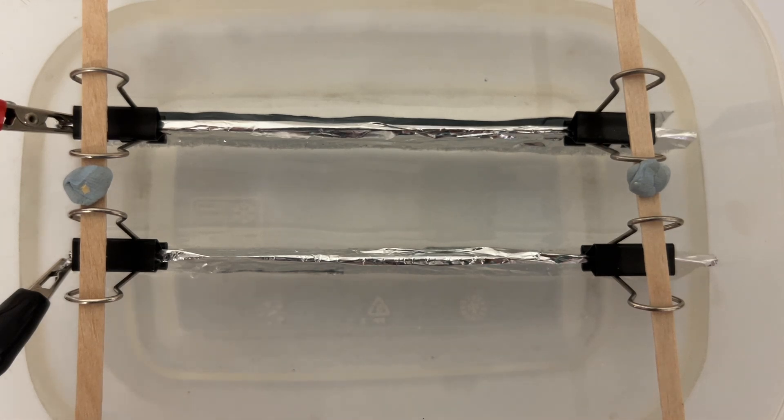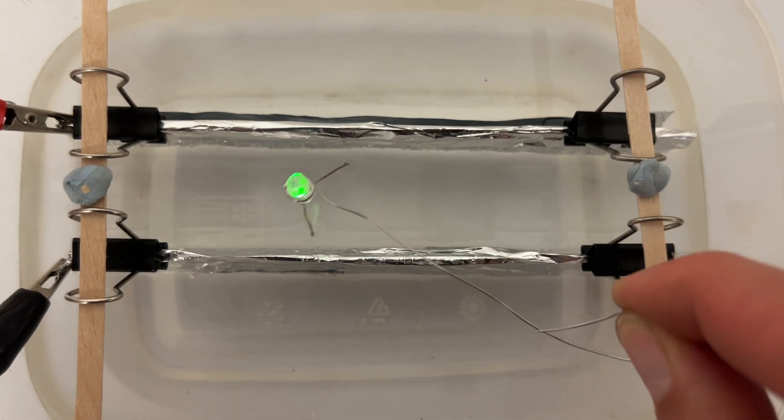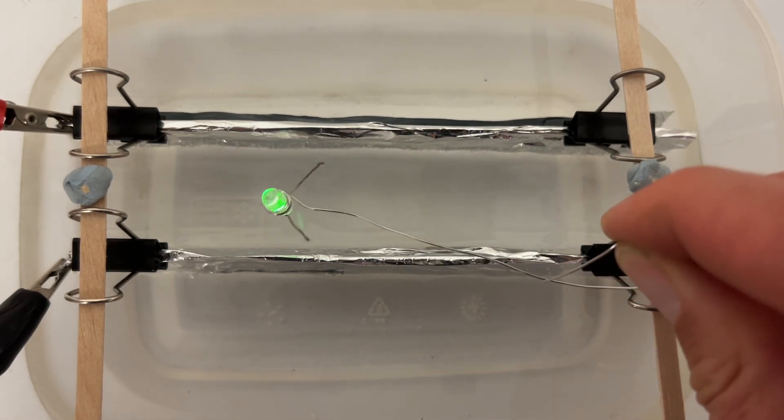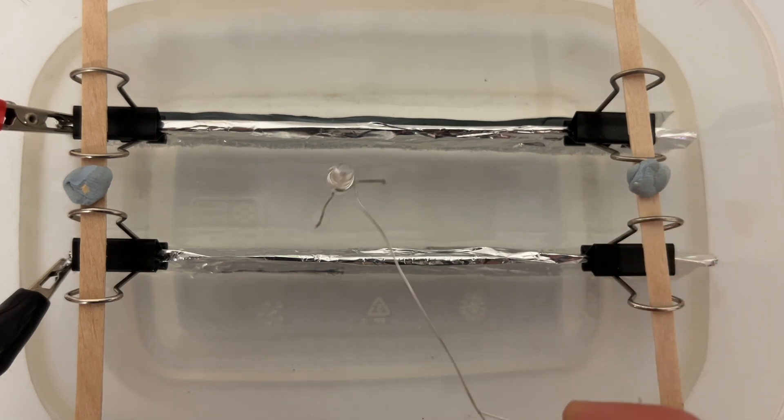You can rotate the LED until the potential difference across it is large enough to make it light up and see how it gets brighter and dimmer as well.